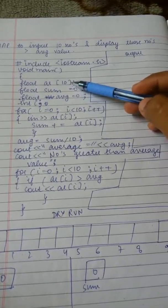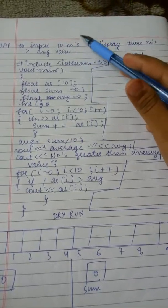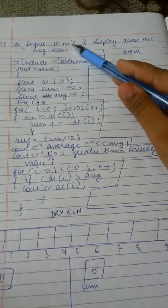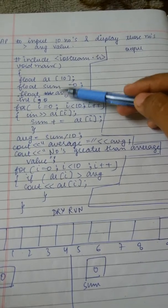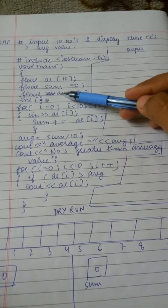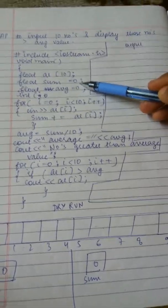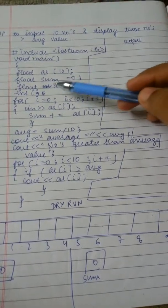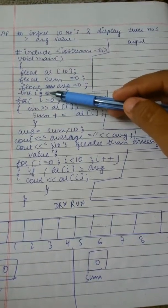Now I have taken two other variables named sum and average and I have initialized their value to 0, and another variable named i I have taken.